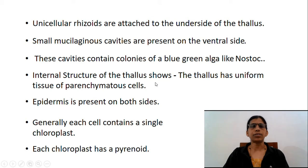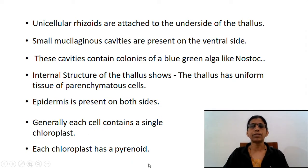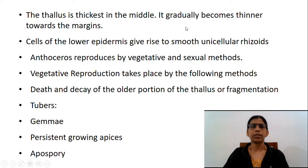Internal structure of the thallus shows uniform tissue of parenchymatous cells. Epidermis is present on both sides. Each cell contains a single chloroplast, and each chloroplast has a pyrenoid. The thallus is thickest in the middle and gradually becomes thinner towards the margins. Cells of the lower epidermis give rise to smooth unicellular rhizoids.